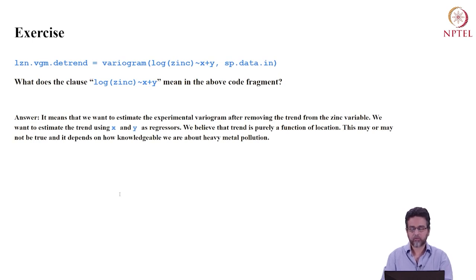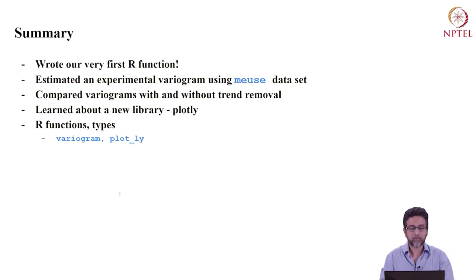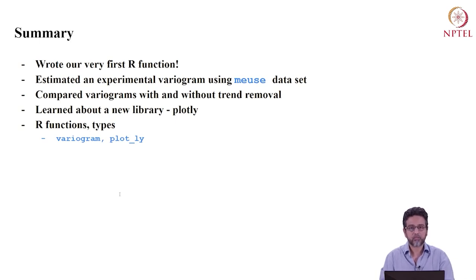Please review it if you haven't understood. So what did we do today? We wrote our very first R function, estimated a variogram from the Muse dataset, compared variograms with and without trend removal, learnt about the new library Plotly, and learnt some new functions. That's it for now — I will see you next time. Thank you very much for your attention.